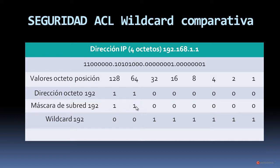La máscara de subred también tiene los mismos valores ya que se forma de la misma manera: el 128 y el 64 y el resto de valores a 0. Pero fijaros que la Wildcard tiene el formato inverso; cuando necesitemos definir los mismos rangos que definiría una máscara de subred, lo tenemos que hacer de forma inversa, escribiendo el formato binario a la inversa. Por ejemplo, en esta ocasión tendríamos en esa máscara Wildcard un valor de 63, lo que indicaría que se revisan las primeras 64 direcciones.